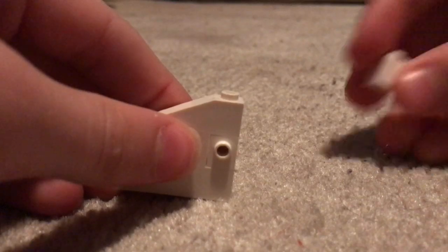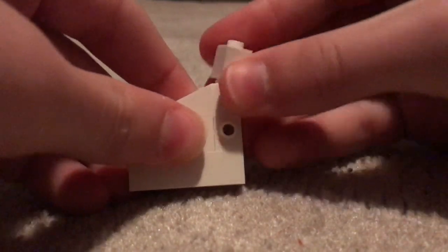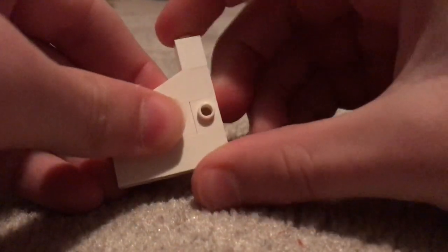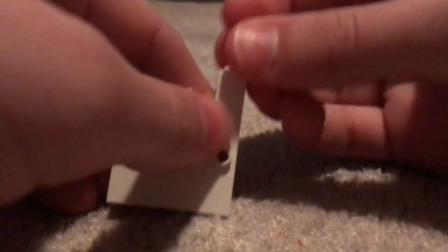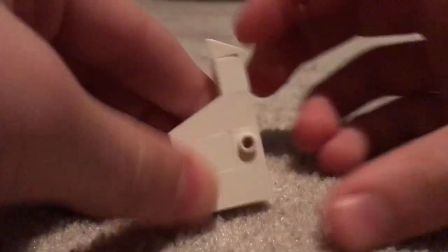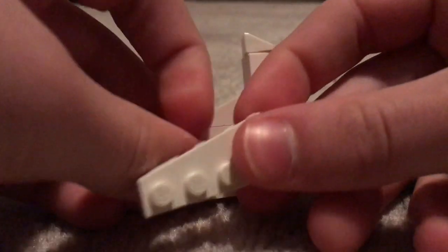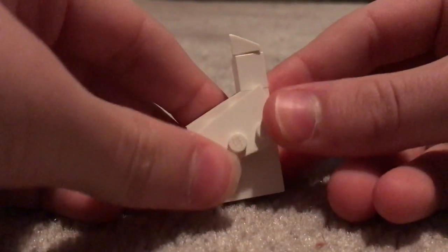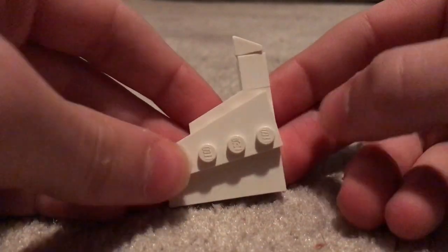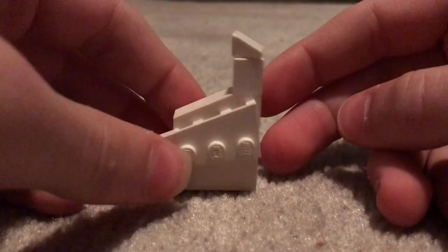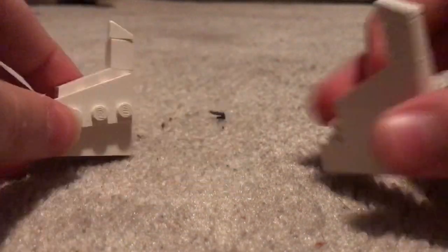You're going to then take a little peg here and then attach a slope part here. And you're going to attach a side piece onto that peg. You're going to make a second one like this.